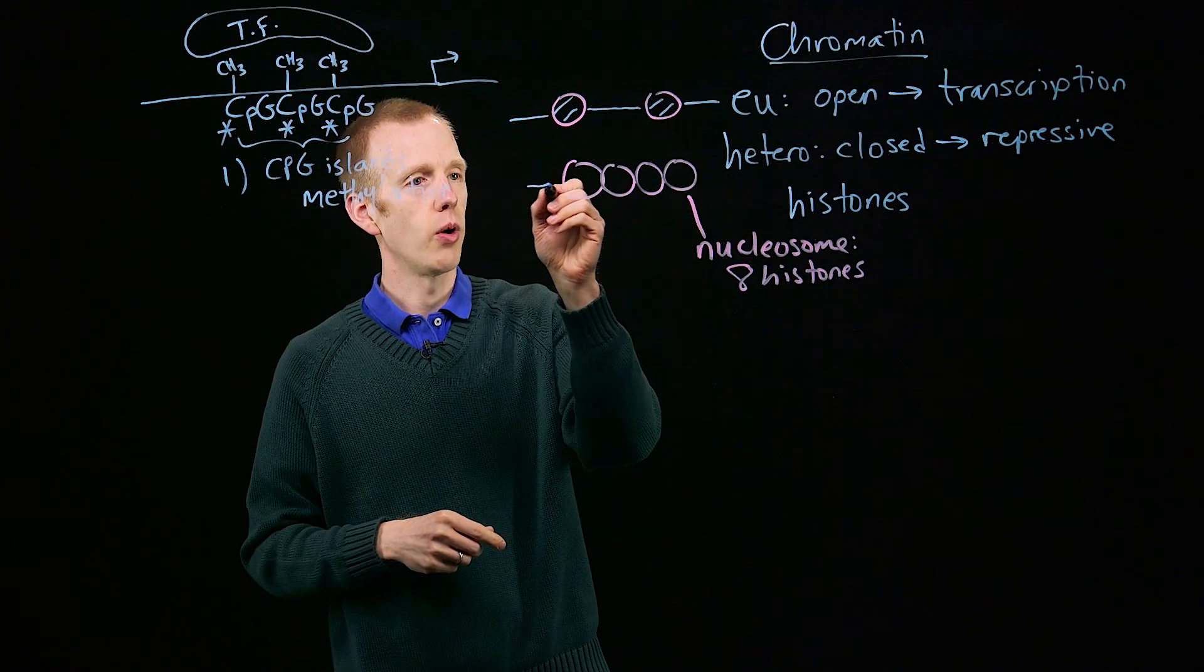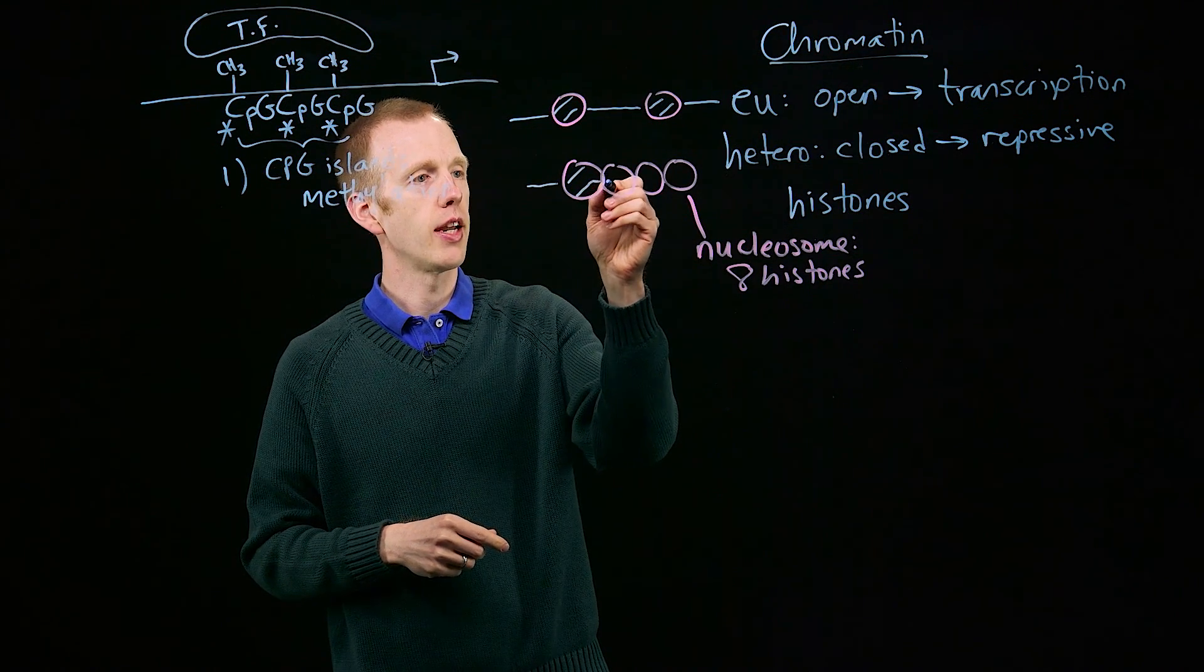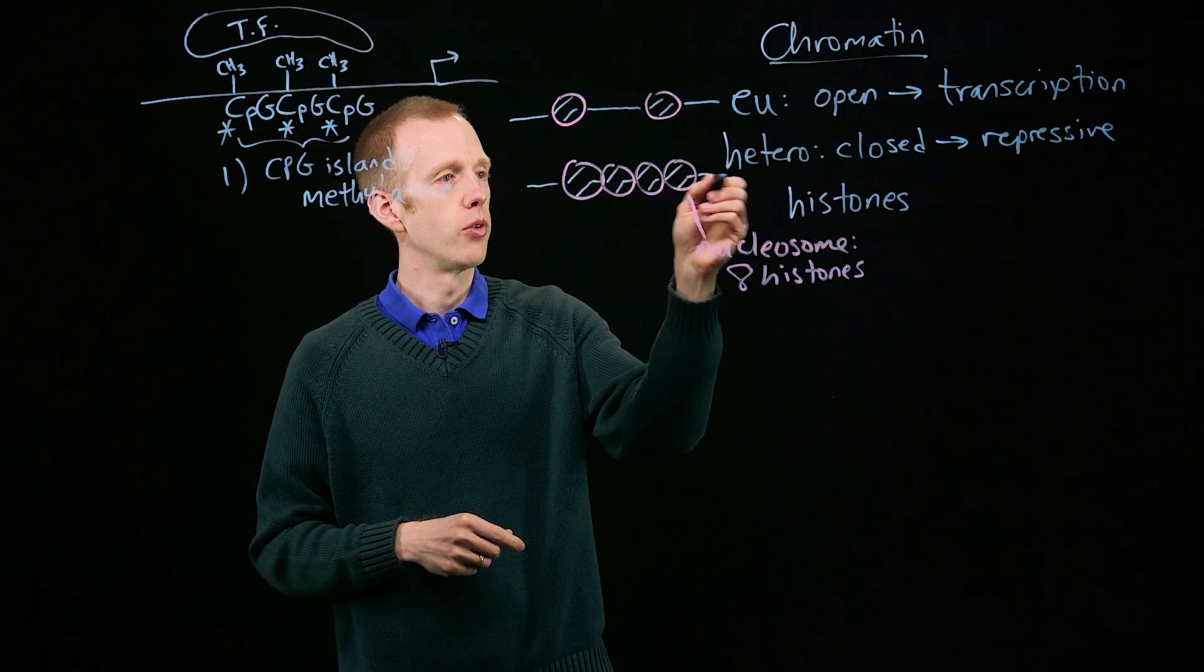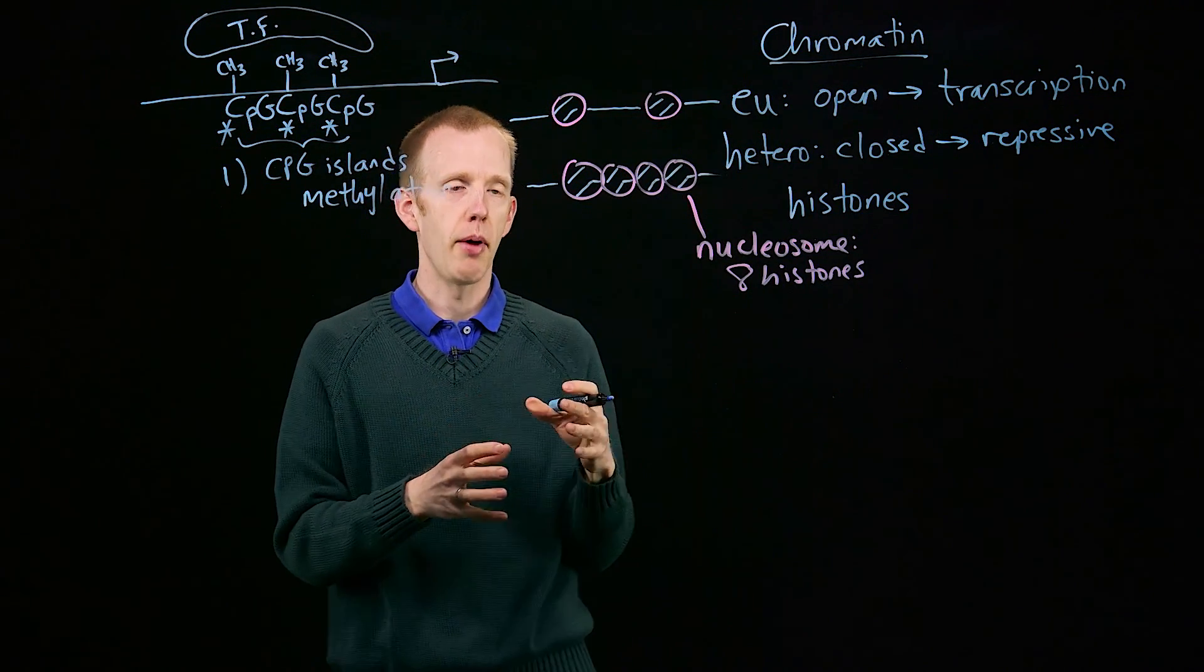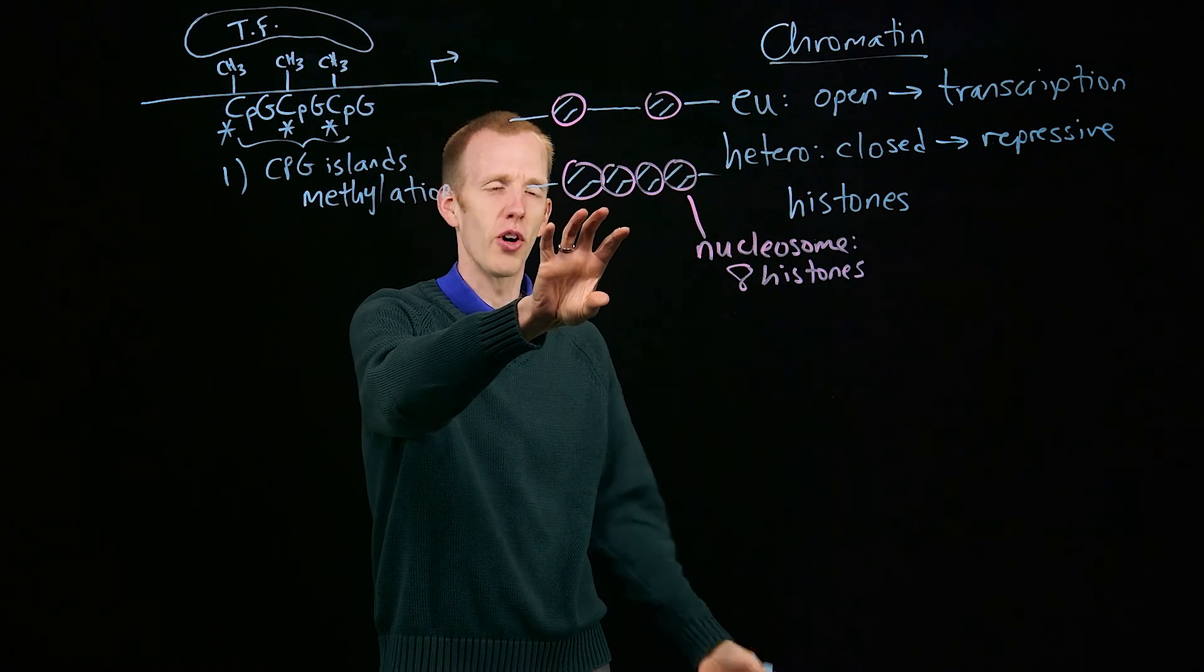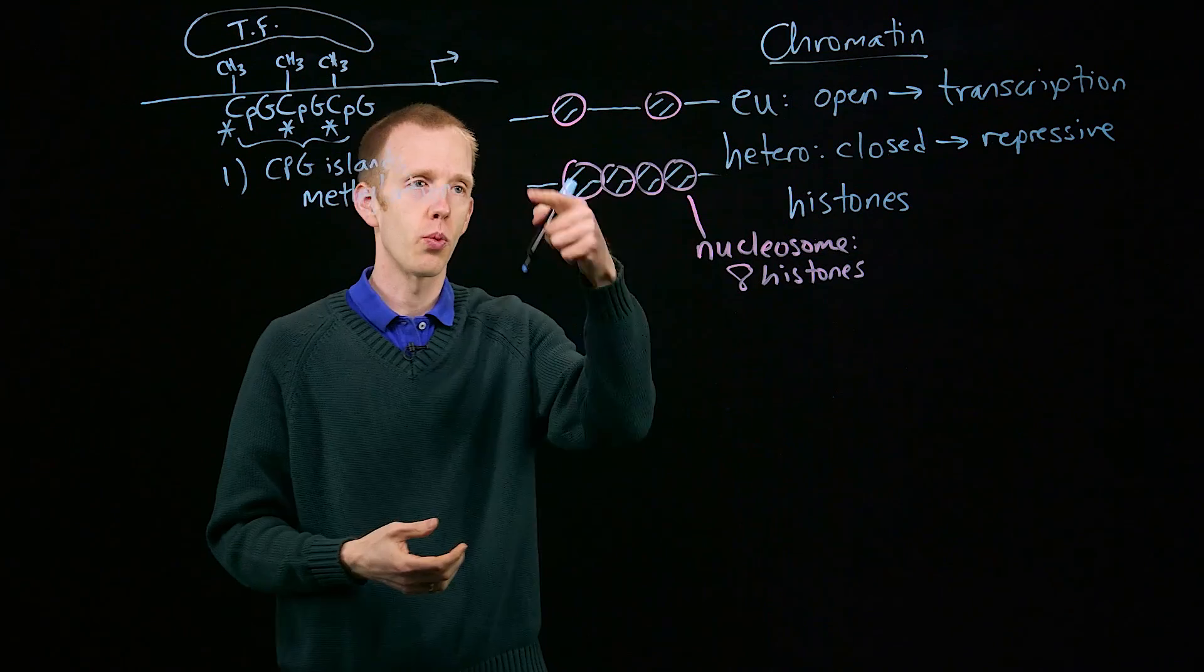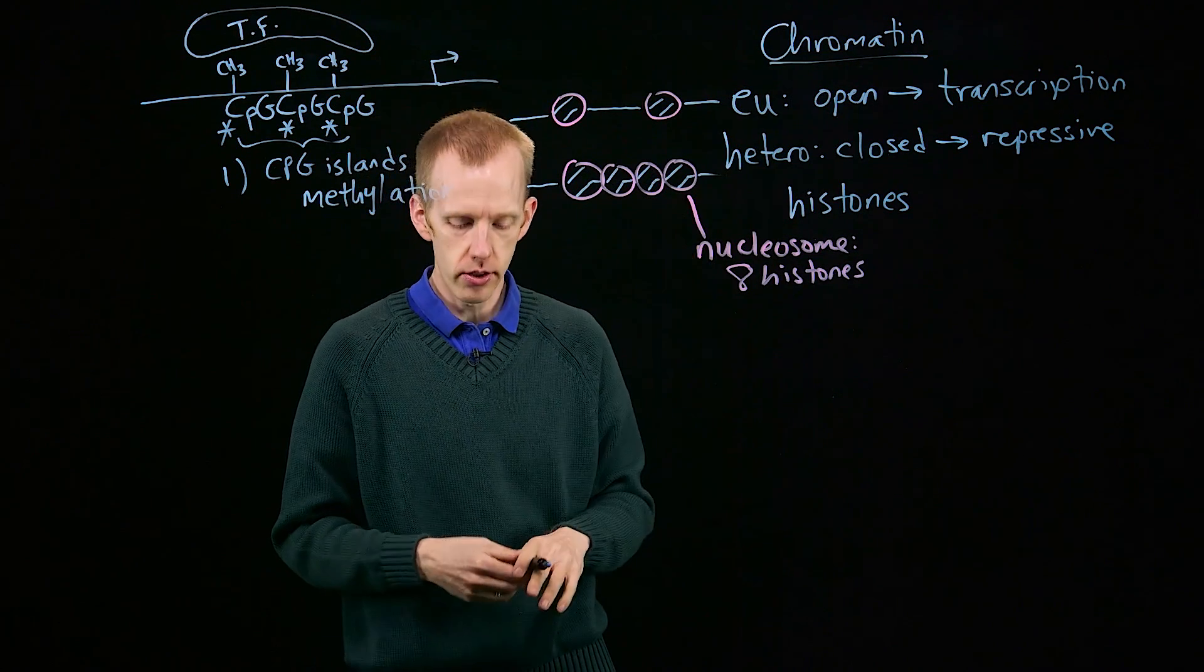And the DNA winds around each set of eight histones, each nucleosome. Here's a euchromatic state, here's what heterochromatin might look like, where the DNA is still wrapped around those histones, but it's much more compact and less friendly to transcription factors, RNA polymerase, and other proteins actually accessing and reading the DNA sequences when they're wound so tightly around these histone proteins.